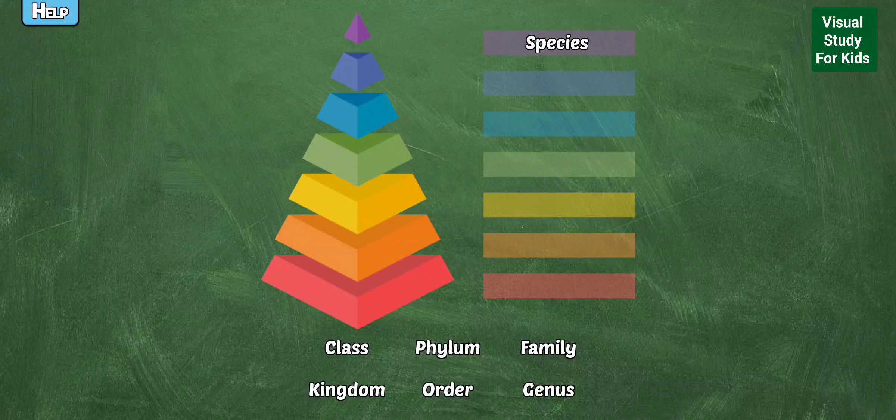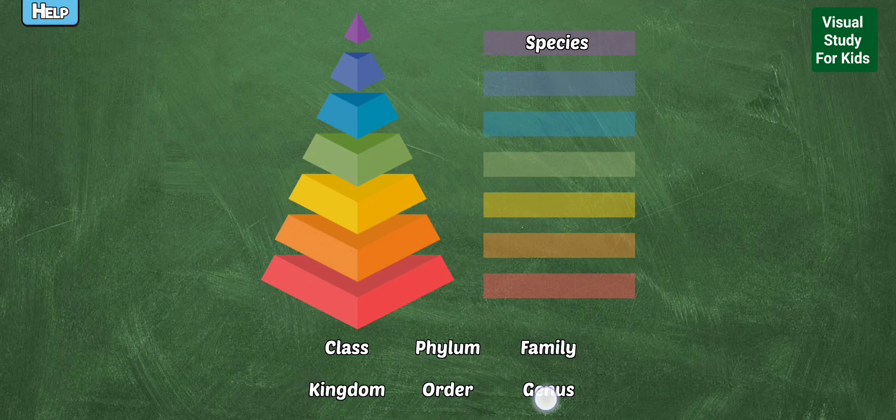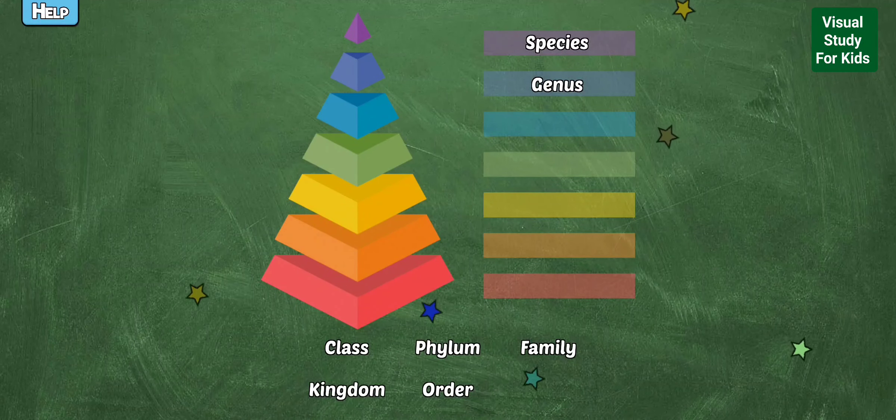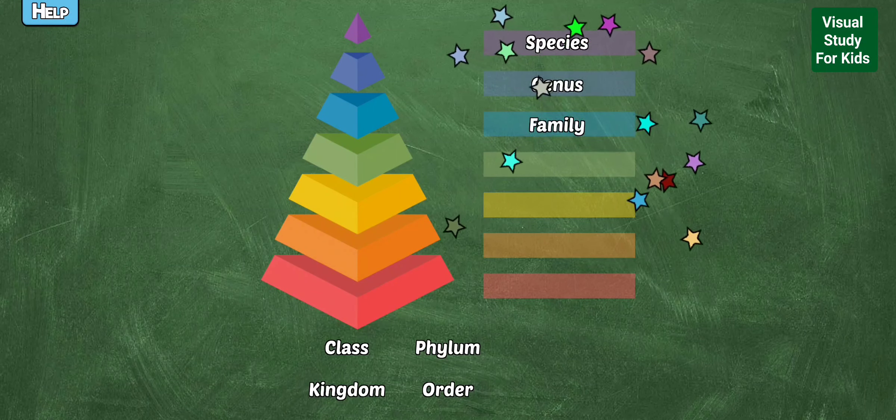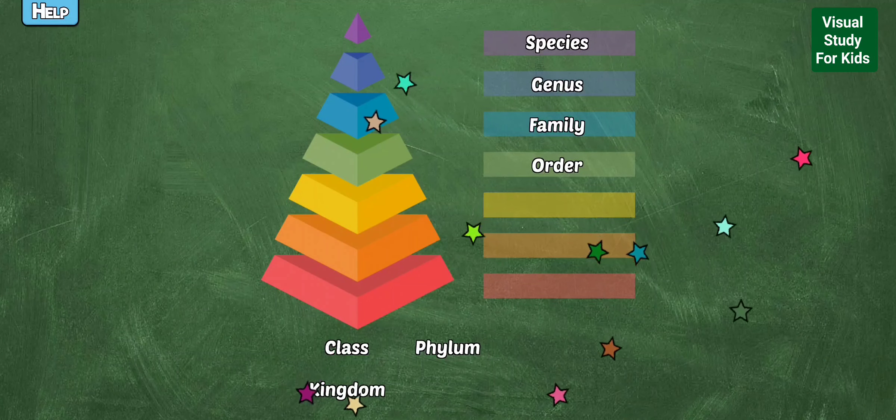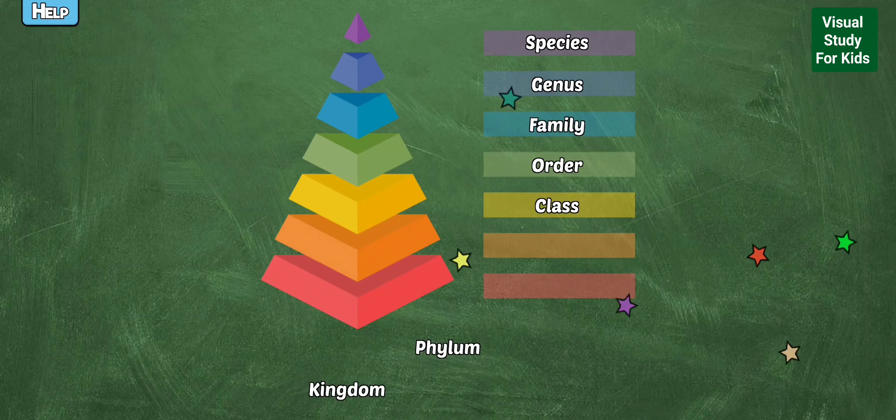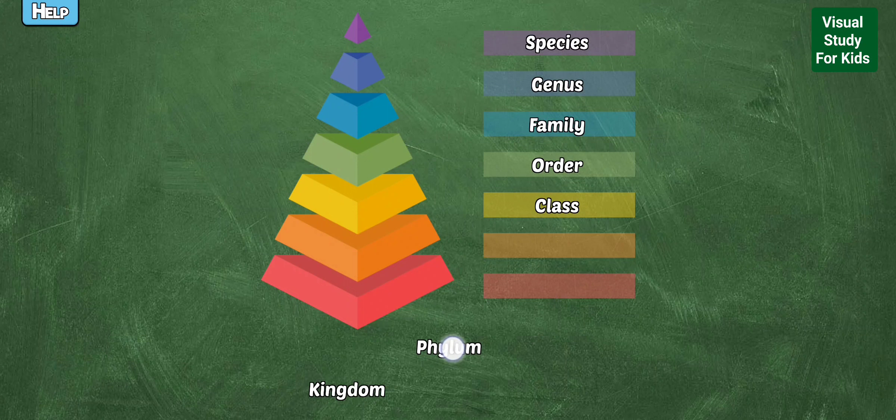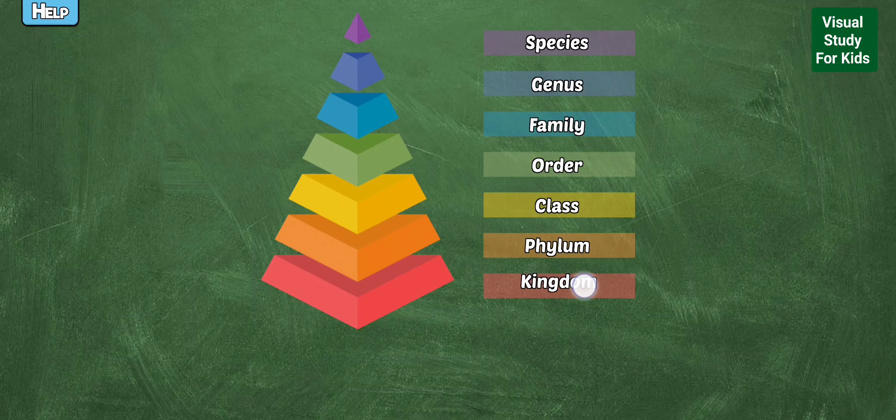Put the classifications in order from most specific to most broad: Genus, Order, Family, Class, Phylum, Kingdom. Right.